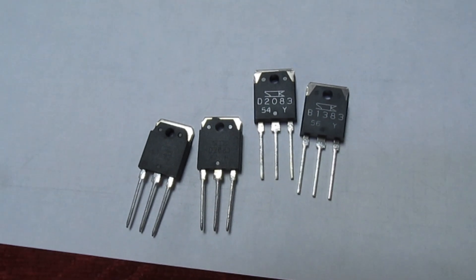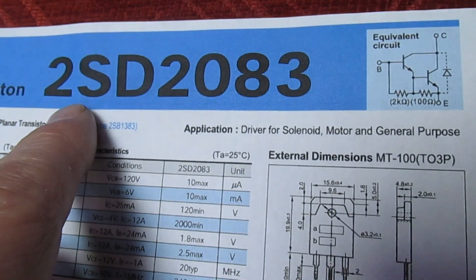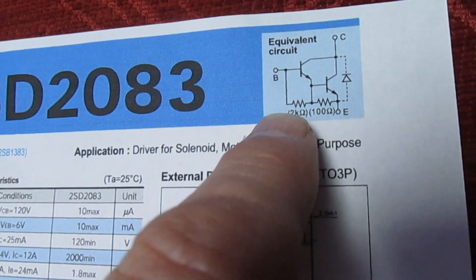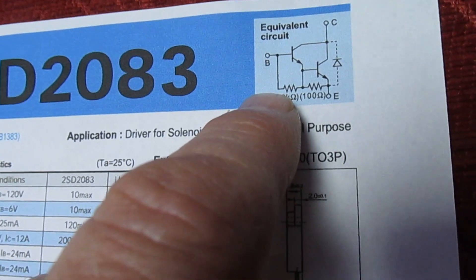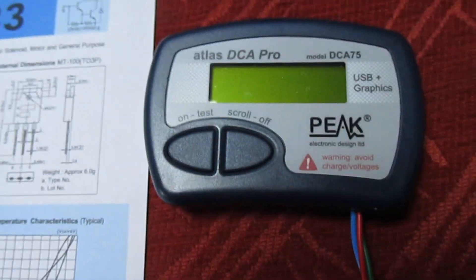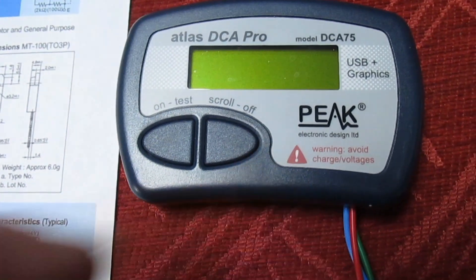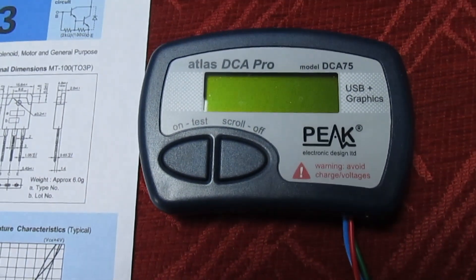It's difficult to see, we haven't got a very good light here, but let's put these on a test now. If we take a look at the data sheet, the 2SD MPN one says it's a Darlington transistor with two internal resistors and an internal diode. Let's put it on the Peak.